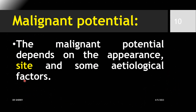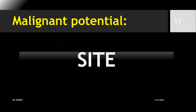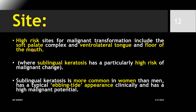Talking about site, the sites of malignant transformation include the floor of the mouth, ventral lateral tongue, and palate, where sublingual keratosis has a particularly high risk of malignant changes. Sublingual keratosis is more common in women than men, has a typical wrinkled appearance clinically, and carries a high malignant transformation potential.